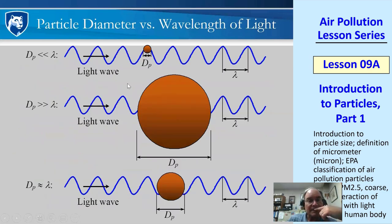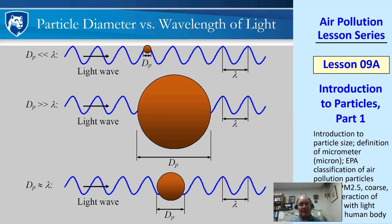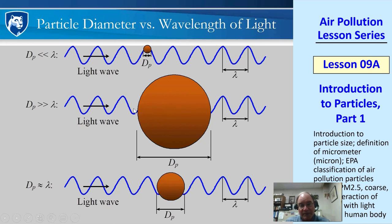Comparing wavelengths of light (lambda) to particle sizes: when a particle is very small compared to lambda — like a tiny boat bobbing on huge waves — there's not much interaction. When a particle is huge compared to lambda — like a cruise ship with small waves lapping against its side — again there's not much interaction; the ship blocks the waves but the waves don't affect the ship. However, when particles are about the same size as the wavelength, there's a lot of interaction.